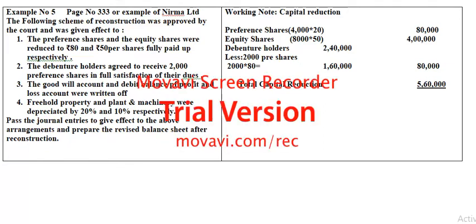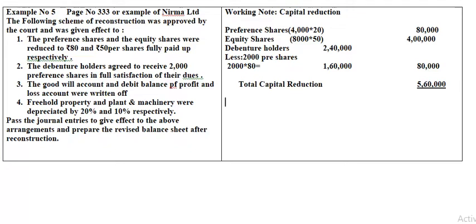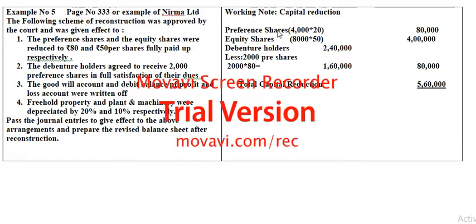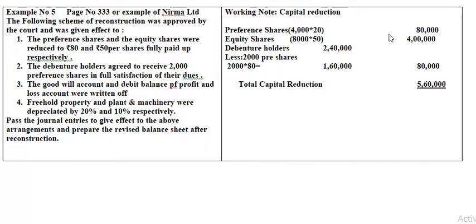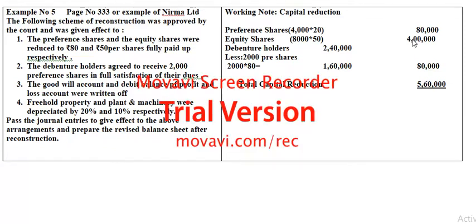Now for the journal entries: first entry — debit preference shares account 80,000, debit equity shares account 4,00,000, credit capital reduction account 4,80,000. Second journal entry — debit debenture holders account 2,40,000, credit preference shares account 1,60,000, credit capital reduction account 80,000.